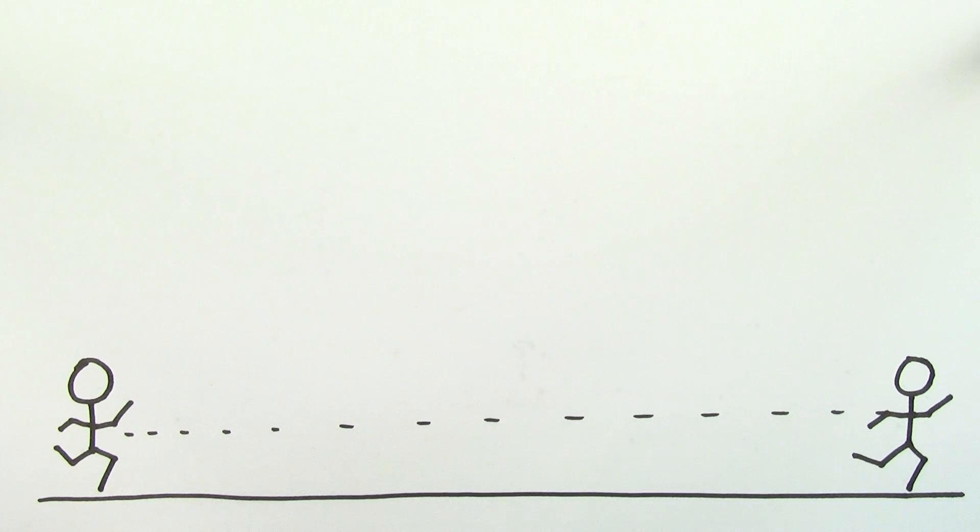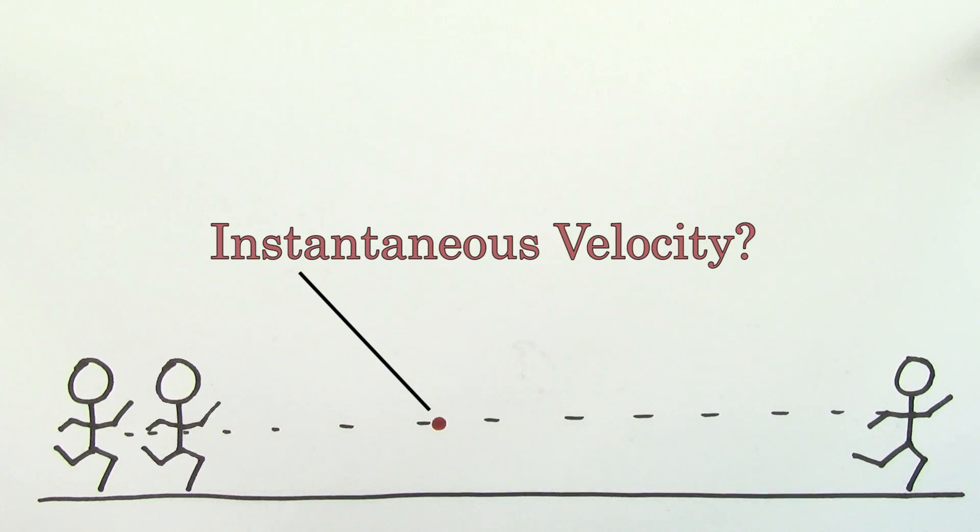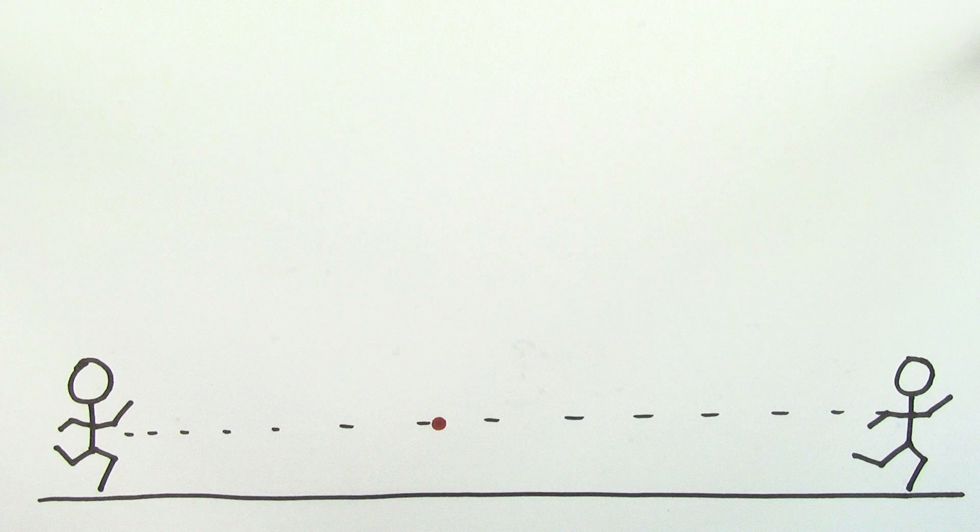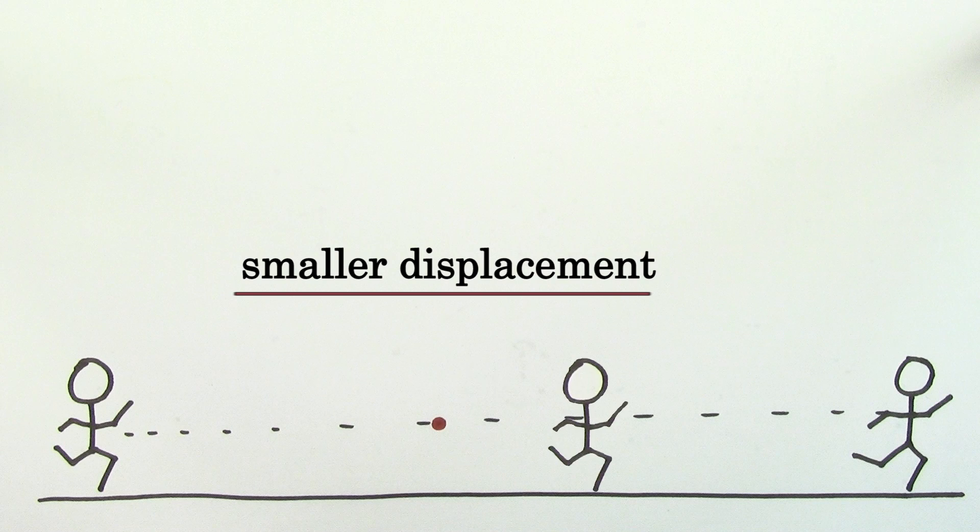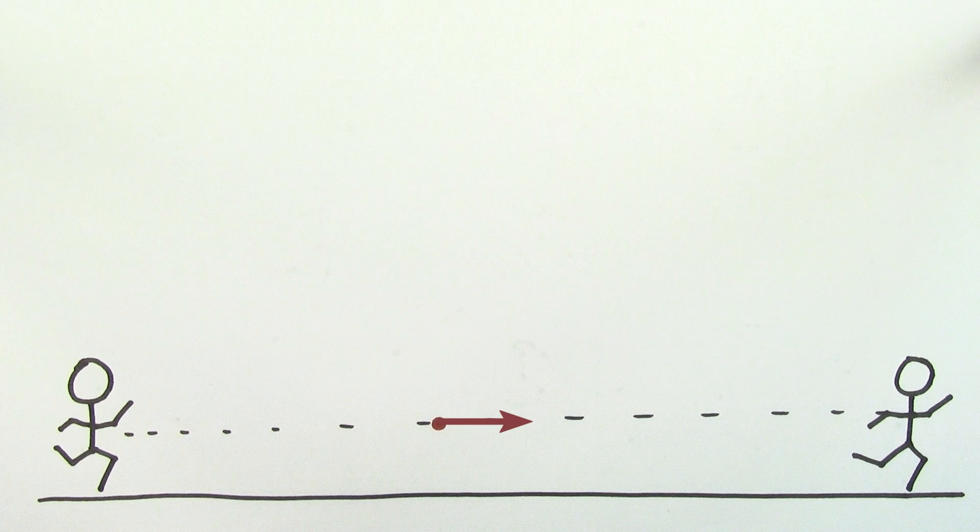Say you wanted to know the instantaneous velocity at a particular point in time during this trip. In that case, you'd want to find a smaller displacement over a shorter time interval that's centered at that point where you're trying to find the instantaneous velocity. This would give you a better value for the instantaneous velocity, but it still wouldn't be perfect.